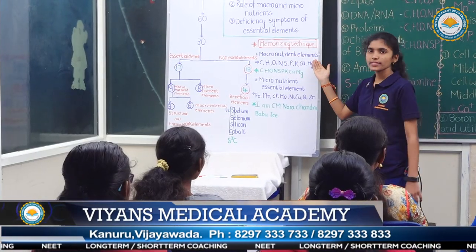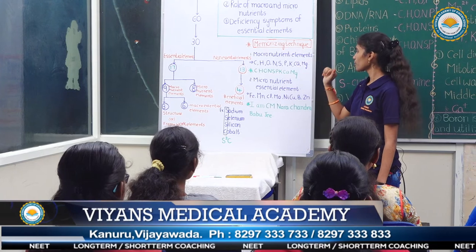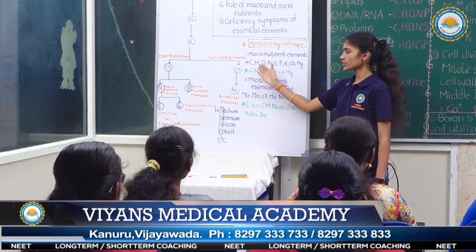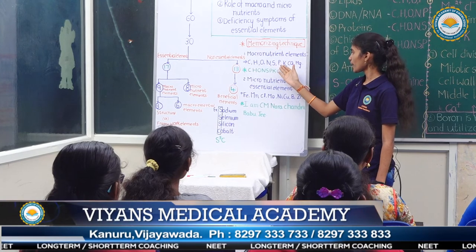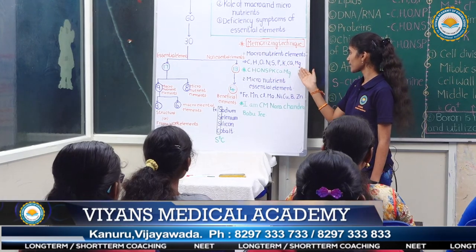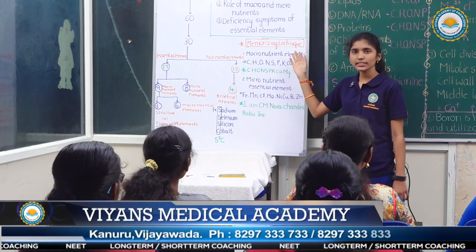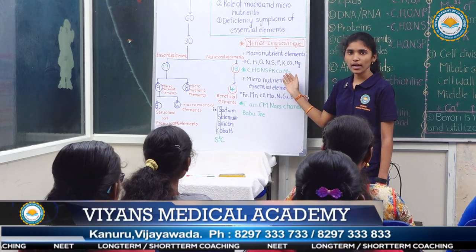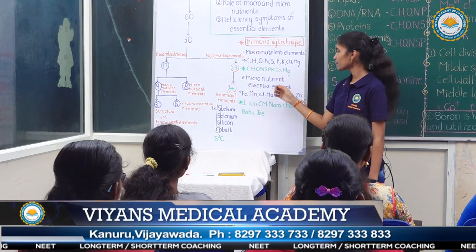Macronutrient elements include: carbon, hydrogen, oxygen, nitrogen, sulfur, phosphorus, potassium, calcium, and magnesium. The memorizing technique is CHON-SPIK-EKA-MAG.